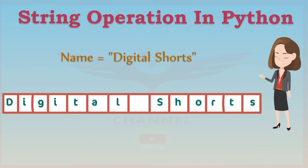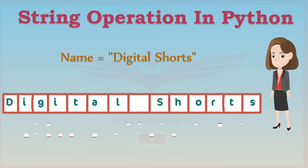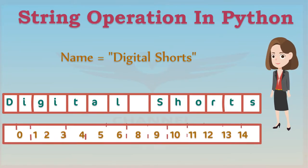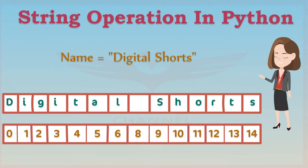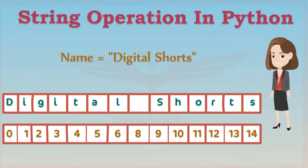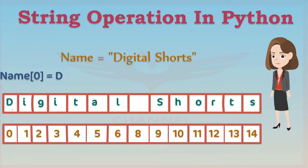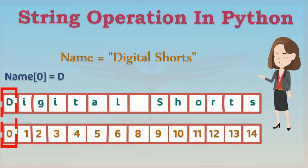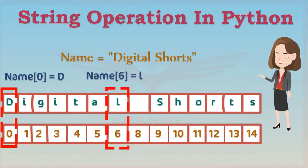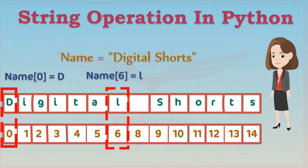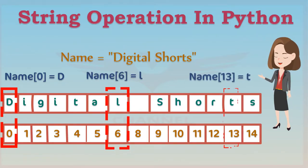It is helpful to think of a string as an ordered sequence. Each element in the sequence can be accessed using an index represented by the array of numbers. The first index can be accessed as follows. We can access index 6. Moreover, we can access the 13th index.